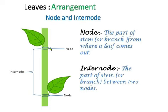The part of the stem or branch from where a leaf or leaves come out is called a node. What is the part between two nodes called? This part of the stem or branch between two nodes is called an internode.